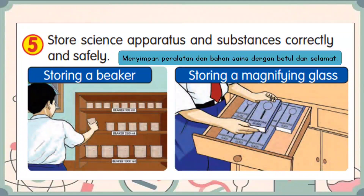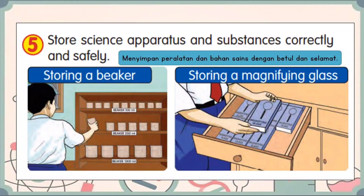The fifth manipulative skill is to store science apparatus and substances correctly and safely. Menyimpan peralatan dan bahan sains dengan betul dan selamat. After using the science apparatus, put it back to its place. Selepas menggunakan peralatan sains, simpan semula ke tempat penyimpanannya.